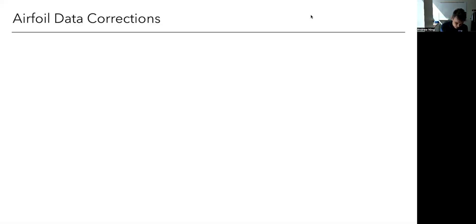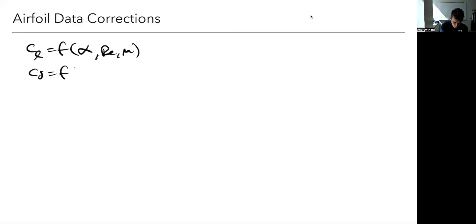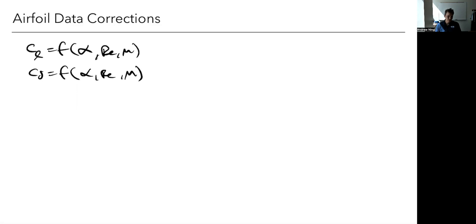If you recall, one of the steps is that CL is a function of alpha, and also Reynolds number and Mach number. Those have to come from some other method, but it's critically important that this data is accurate. The accuracy of Blade Element Momentum Theory hinges on the accuracy of this data. Often the data we get — whether from a panel code, wind tunnel, or data posted online — most of the time you cannot just use it as-is.